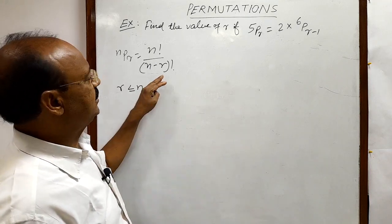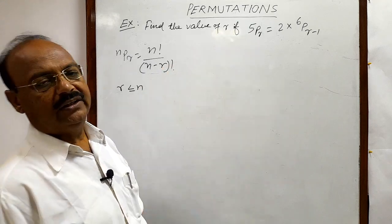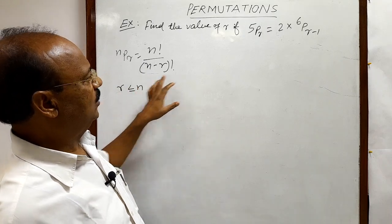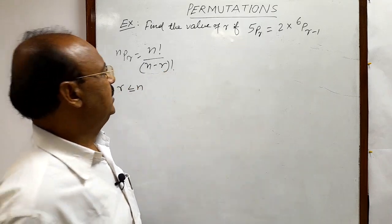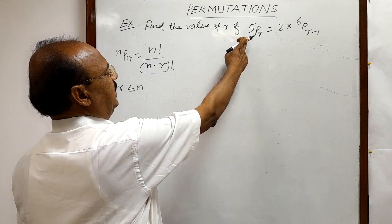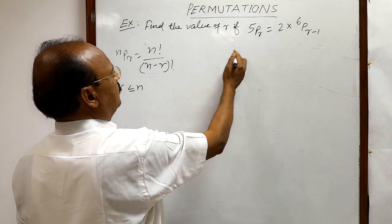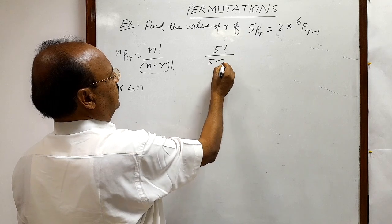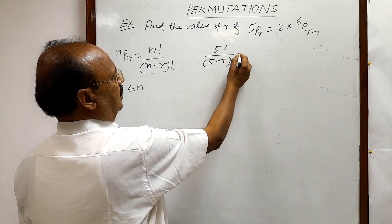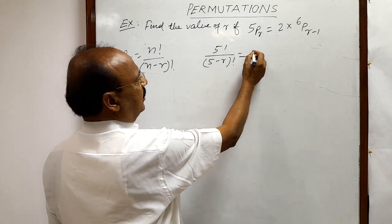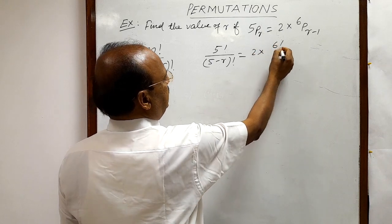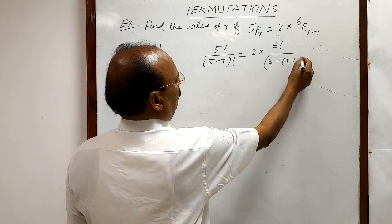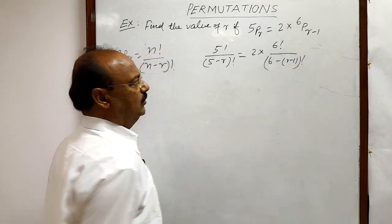So we will use this formula here to get the solution and find the value of r. With the help of this formula, 5Pr can be written as, in place of n we have 5 and r is here. So this can be written as 5 factorial upon 5 minus r whole factorial. And in the right hand side similarly we can write 2 into 6 factorial by 6 minus r minus 1 whole factorial.